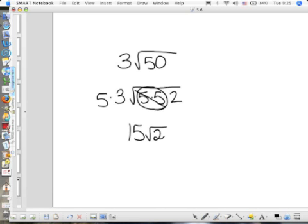You want to know how you can check yourself on your calculator? On your calculator, enter 3 times the square root of 50, and then divide it by 15 times the square root of 2, and you should get 1, because it should be the same thing.